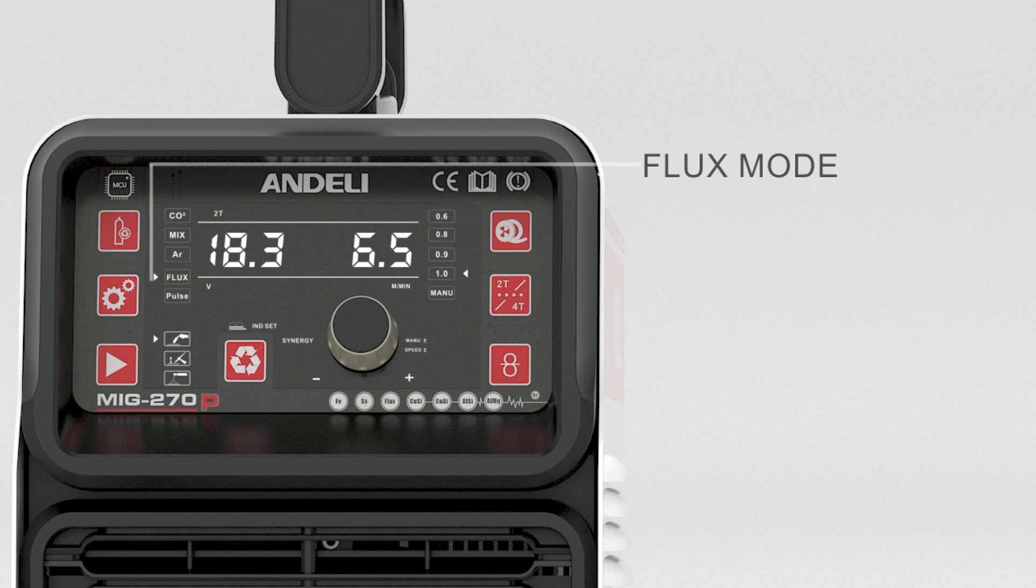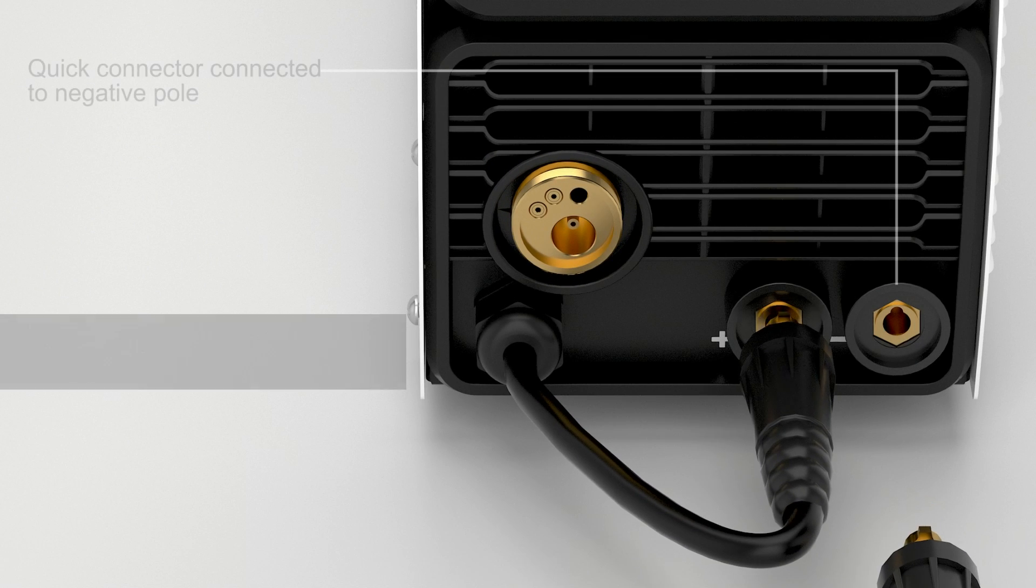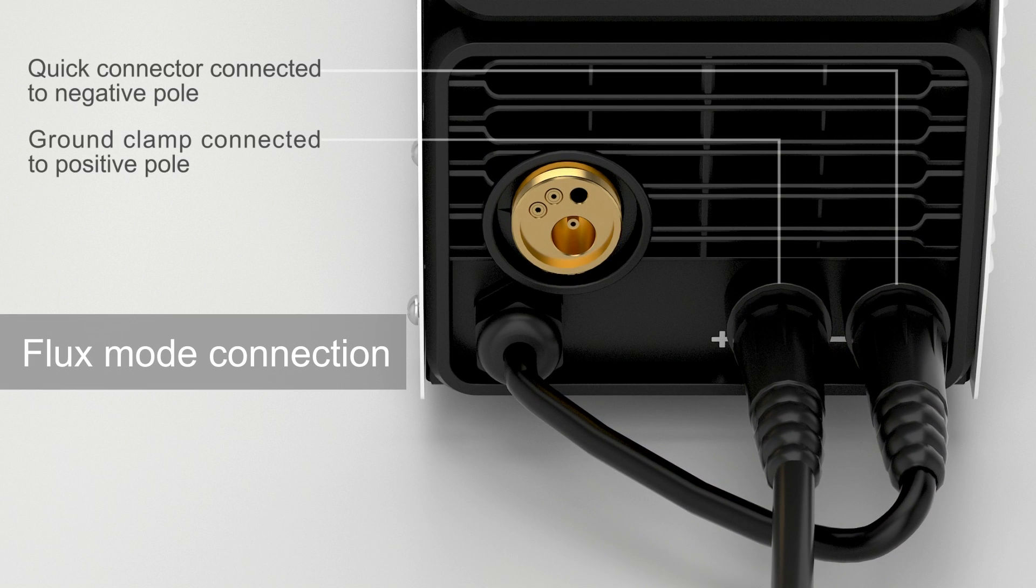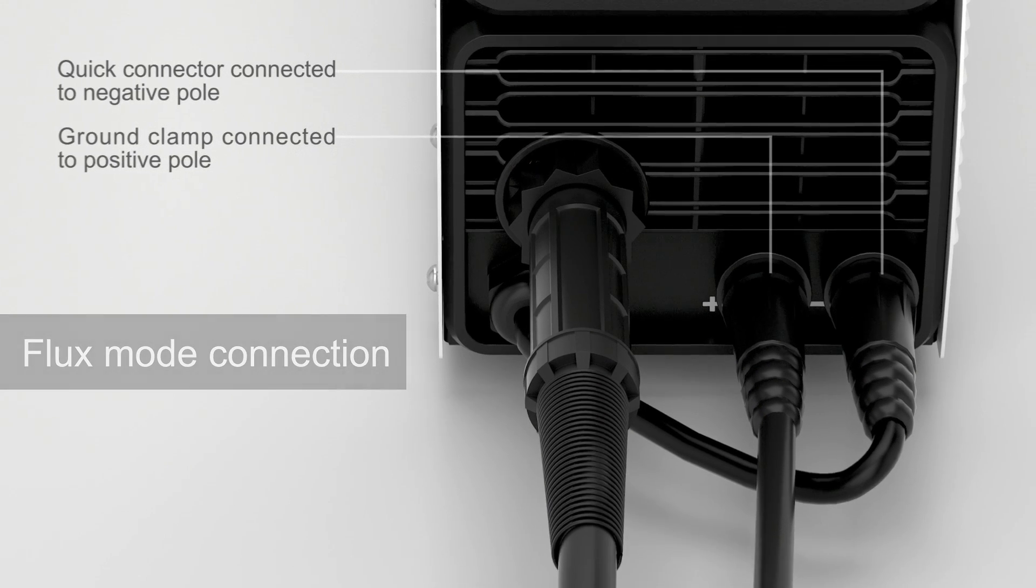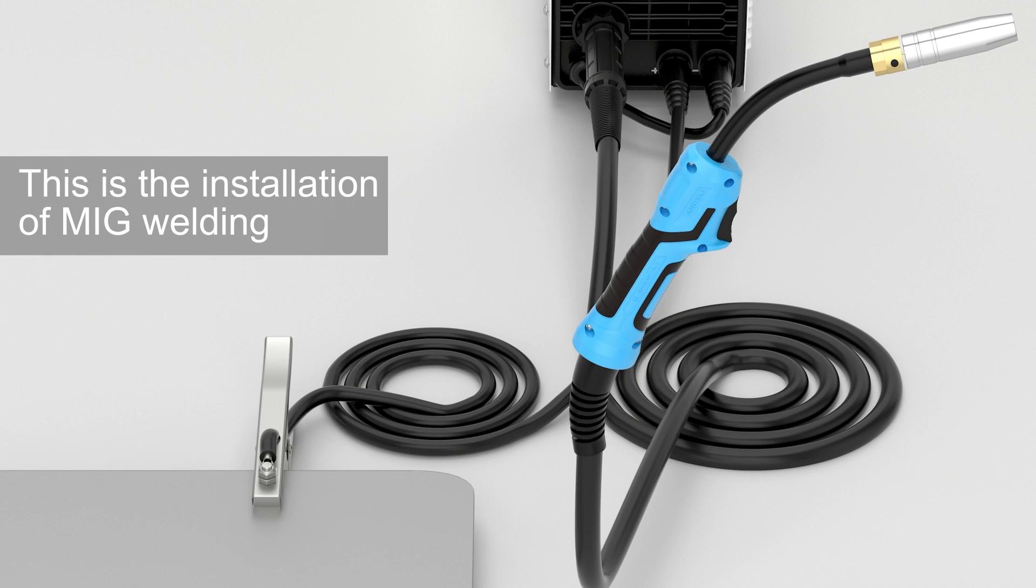Flex mode connection: ground clamp connected to positive pole, quick connector connected to negative pole. This is the installation of MIG welding.